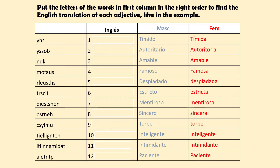We've done a lot of work on adjectives recently, and they will keep coming up throughout your Spanish lessons. With this table, read the adjectives in Spanish — they're in singular form only. Focus on the English meaning. For example, 'tímido/tímida' — with the letters y, h, s — spells 'shy.' Carry on through the rest; you may or may not have seen some of these before. Take a guess using the jumbled letters, then we'll go through the answers.